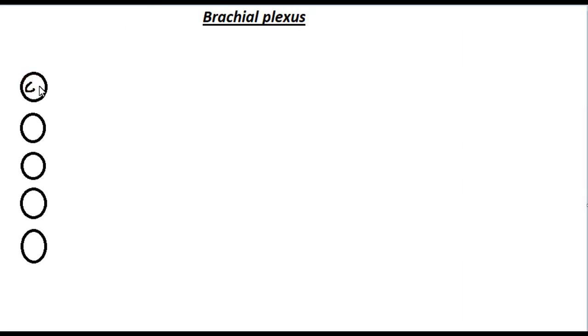So today's topic is brachial plexus. It is formed by the ventral primary rami of C5, 6, 7, C8 and T1.